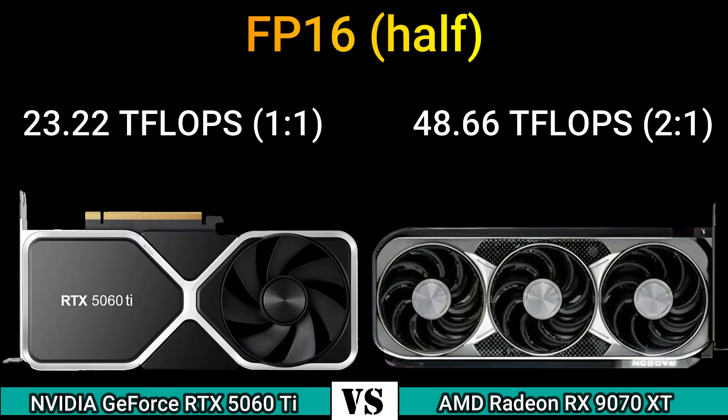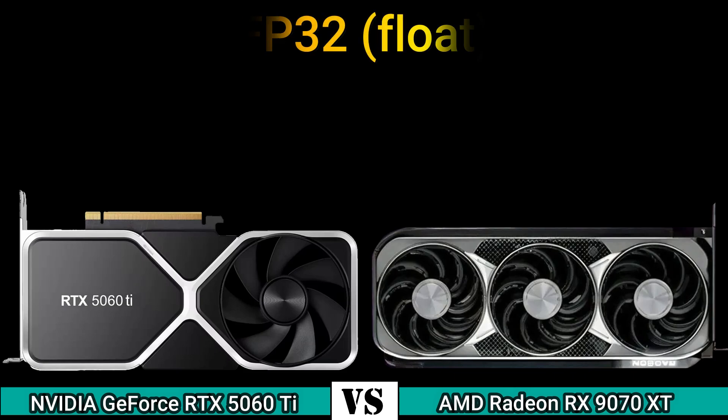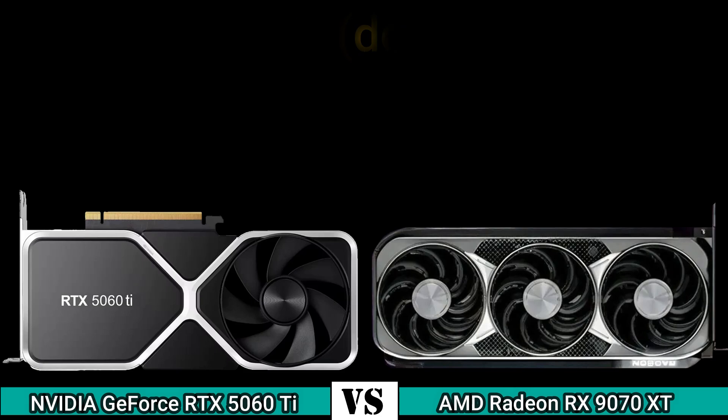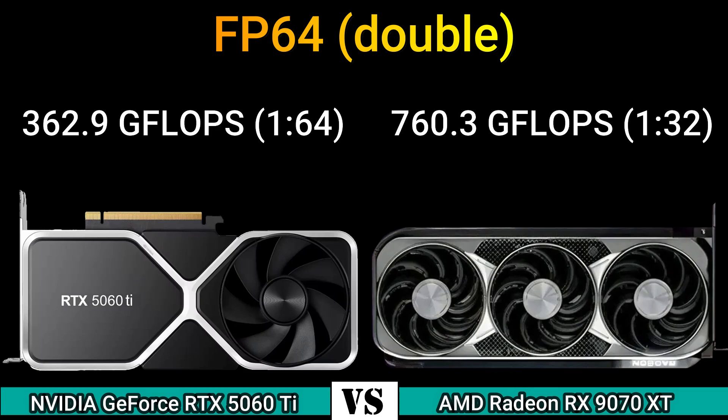FP16 half: 23.22 teraflops at 1:1 and 48.66 teraflops at 2:1. FP32 float: 23.22 teraflops and 24.33 teraflops. FP64 double: 362.9 gigaflops at 1:64 and 760.3 gigaflops at 1:32.